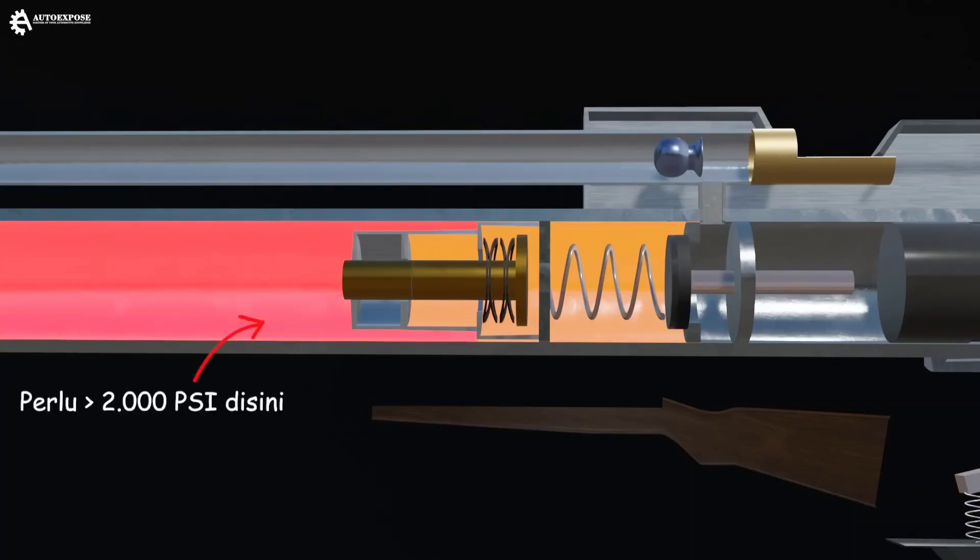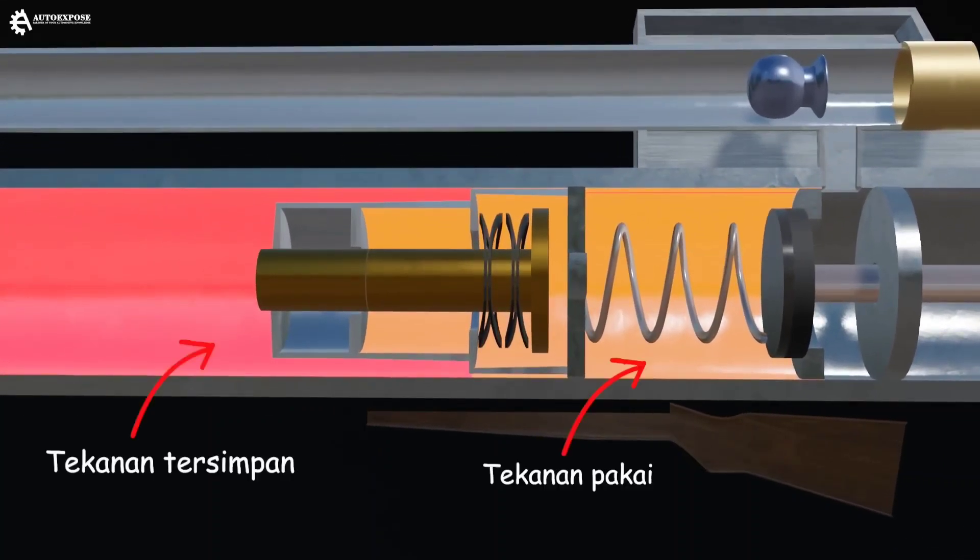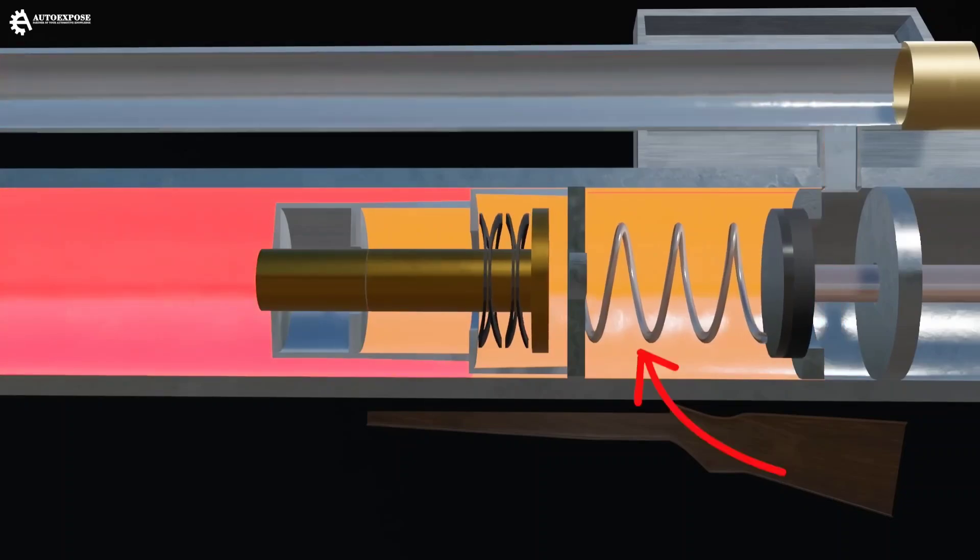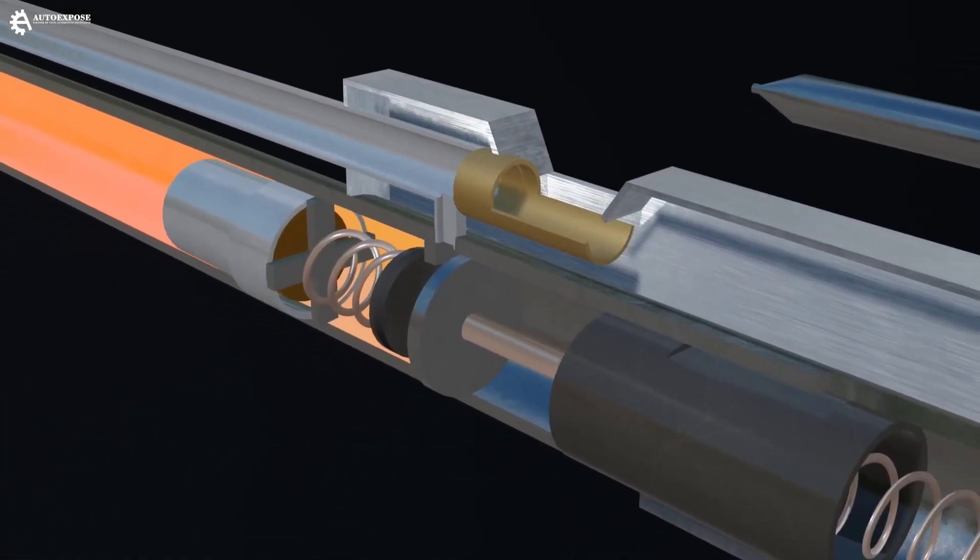However, in order for the rifle to be used continuously with maximum power, we need to fill this tube more than 2000 psi. Therefore, there is a regulator valve that will separate the pressure in the two chambers before and after the valve. Thanks to the regulator valve, even though the pressure in the main tube is, for example, 4000 psi, the standby pressure remains 2000 psi. This makes the bullet ejection power stable.